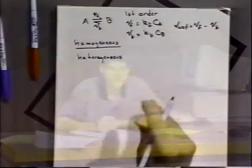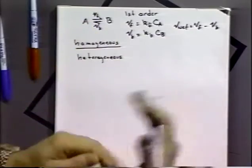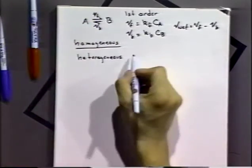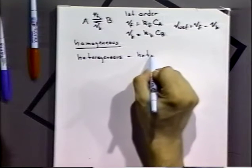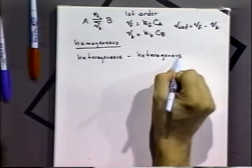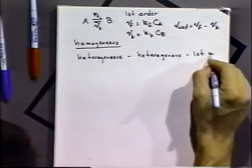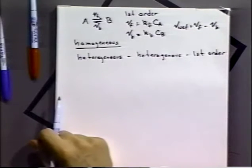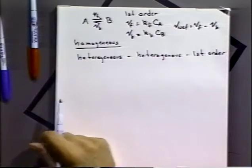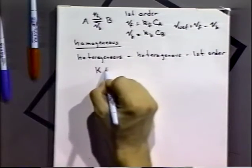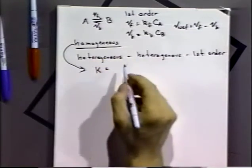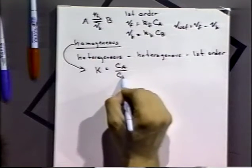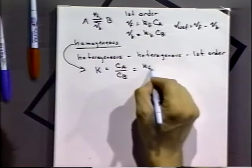Electrode reactions are heterogeneous — not isotropic — because there is an interface where the reaction occurs, so it's not uniform in all directions. We'll be looking at heterogeneous kinetics. Heterogeneous kinetics are first order as a rule, so by understanding first-order homogeneous kinetics, we can understand some aspects of first-order heterogeneous kinetics.